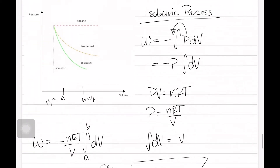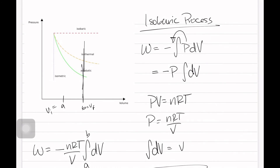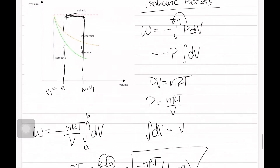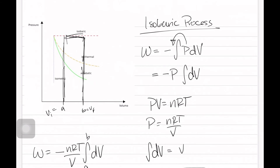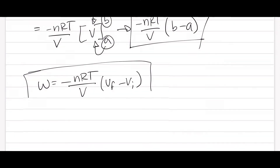Notice something interesting: for an isobaric process it's essentially a rectangle, since pressure is constant. We know that this is the pressure — the height — and this here is essentially the width of the rectangle, which you can see perfectly. The pressure is our height, and this V is the initial volume.